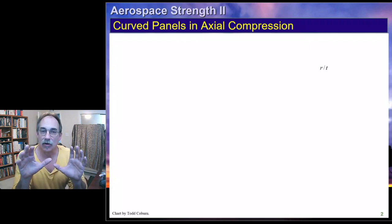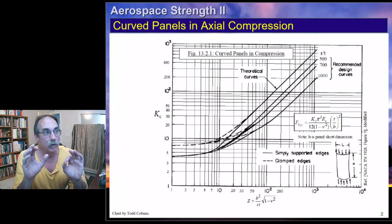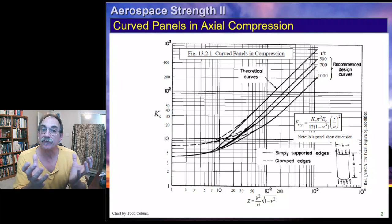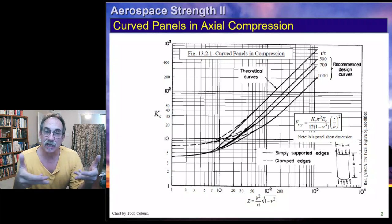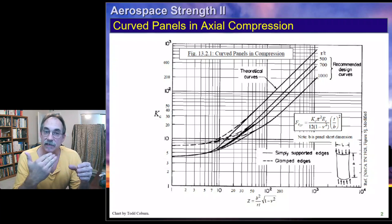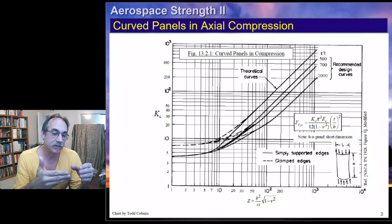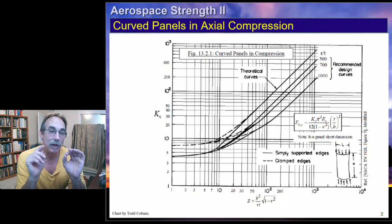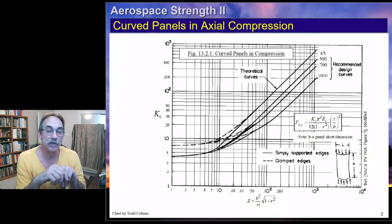So if we have a curved panel under compression, we can come to this chart to evaluate the buckling allowable. For example, let's say we have a fuselage. The underside of the fuselage — the bottom skin — tends to be in compression. The skin is typically broken into panels by frames and stringers. We can take that frame spacing as the length and that stringer spacing as the width, and that panel is under just almost exactly this condition. So if we have a panel under compression, we're going to come here. We're going to use the same Z-parameter that we use for cylinders.